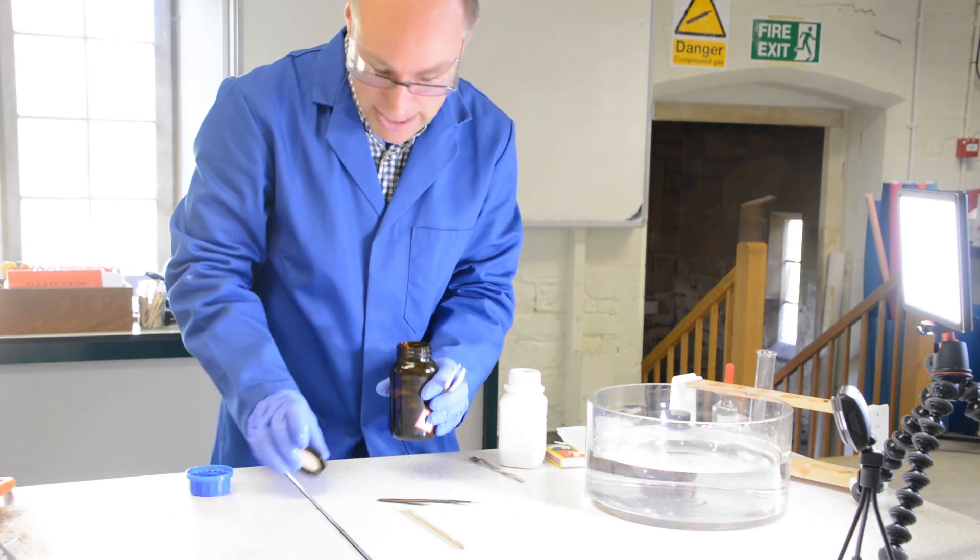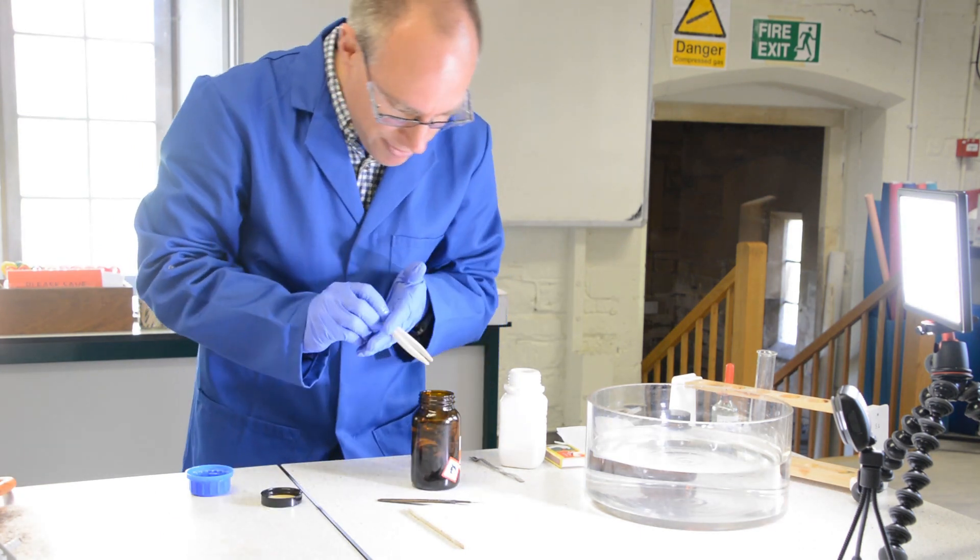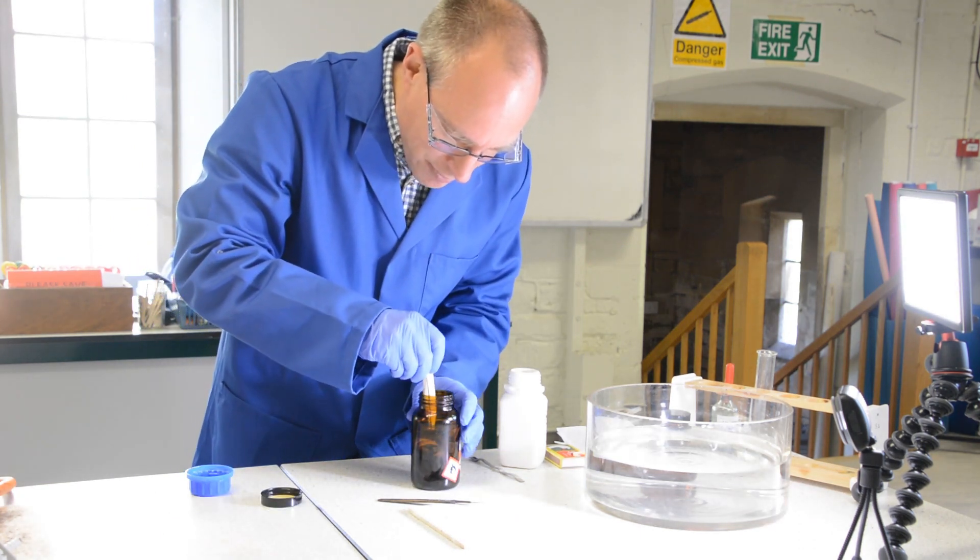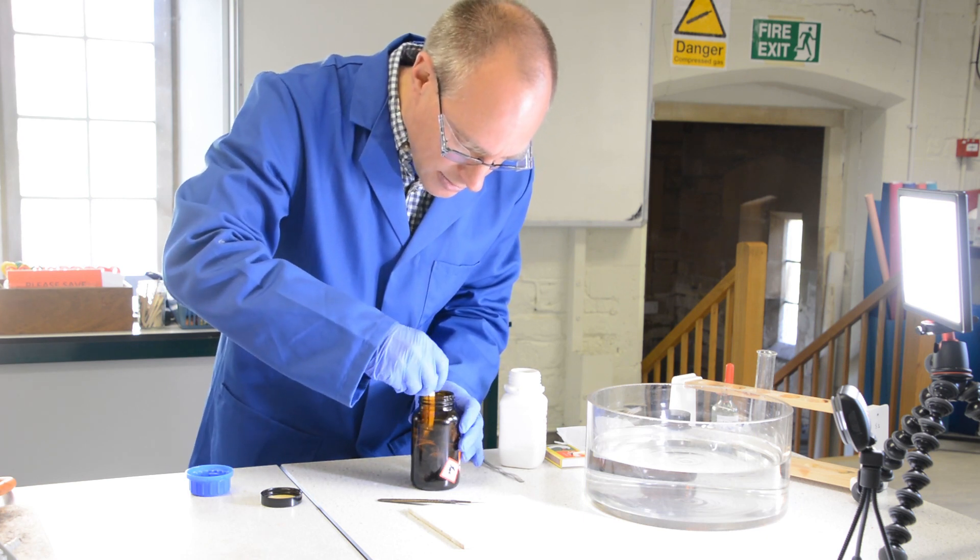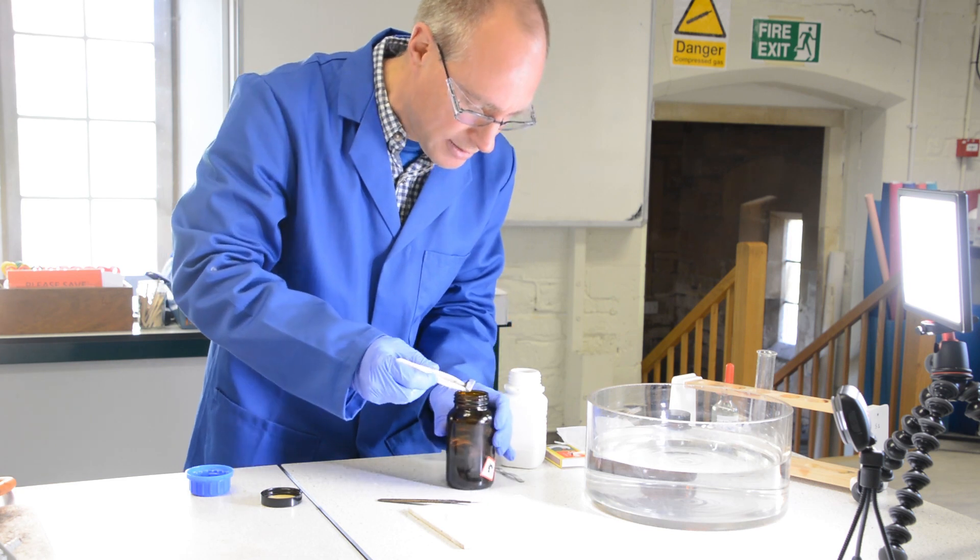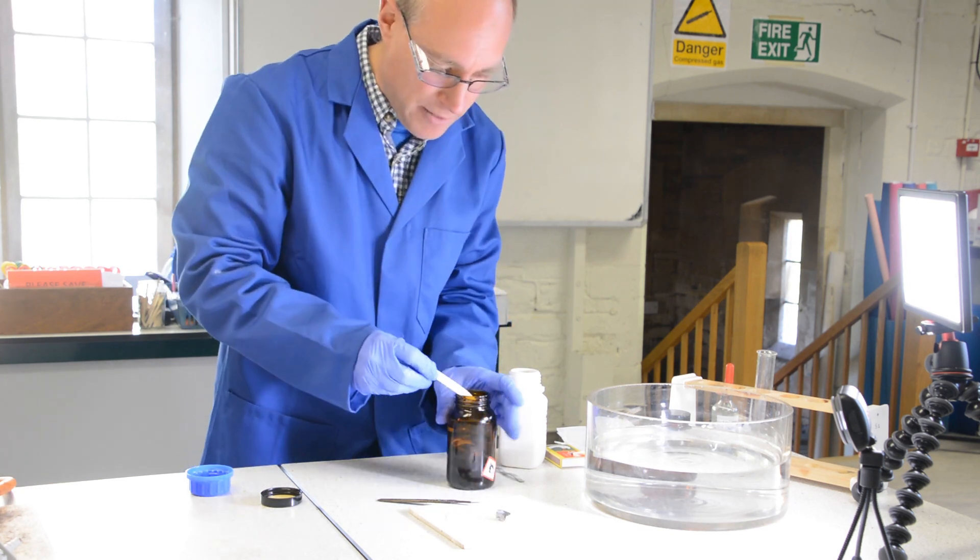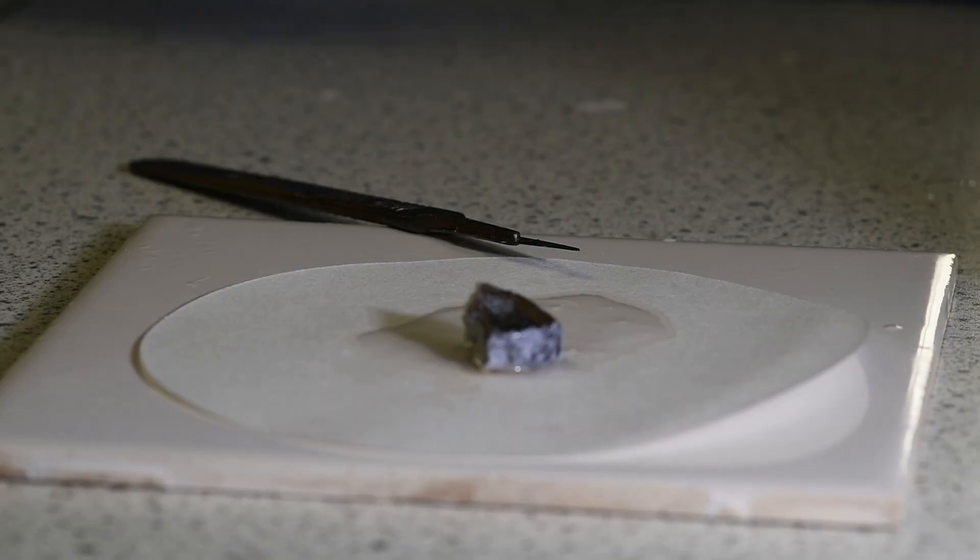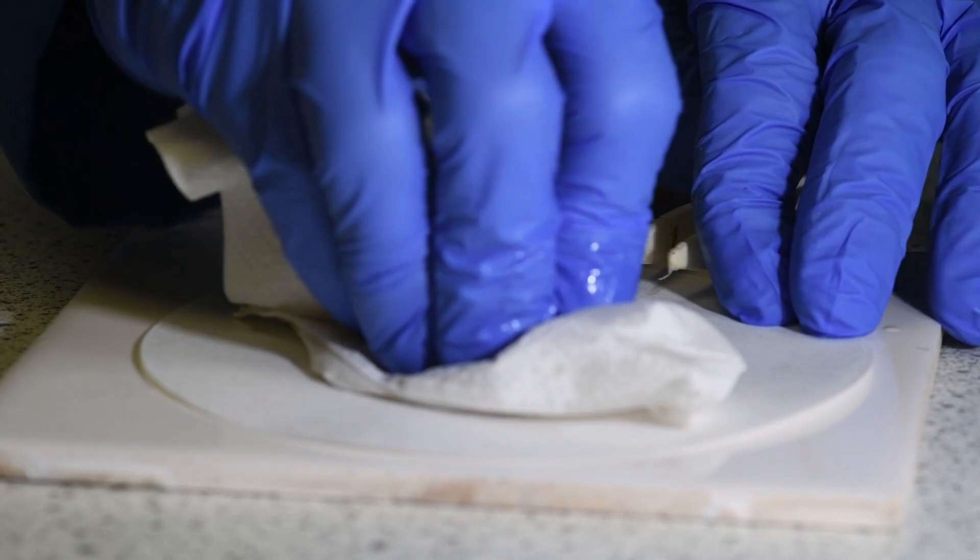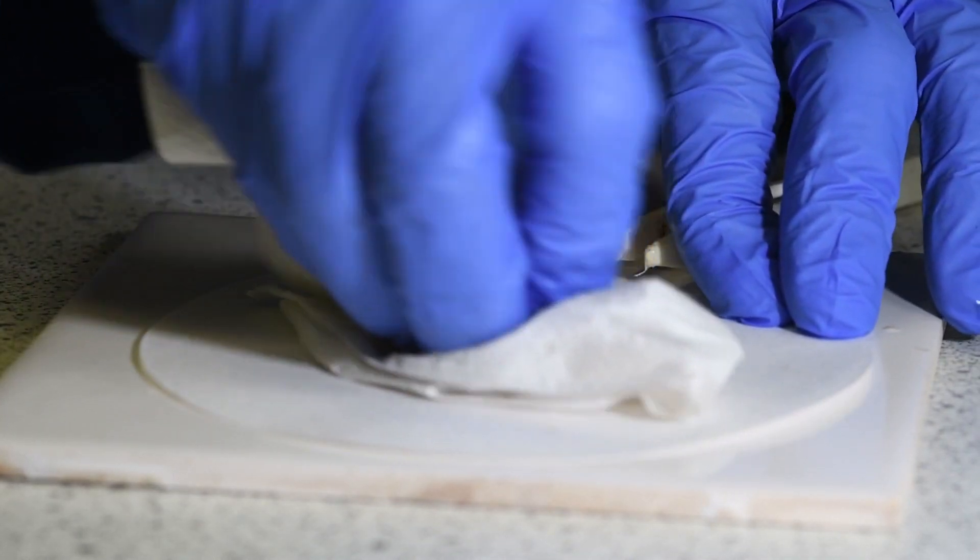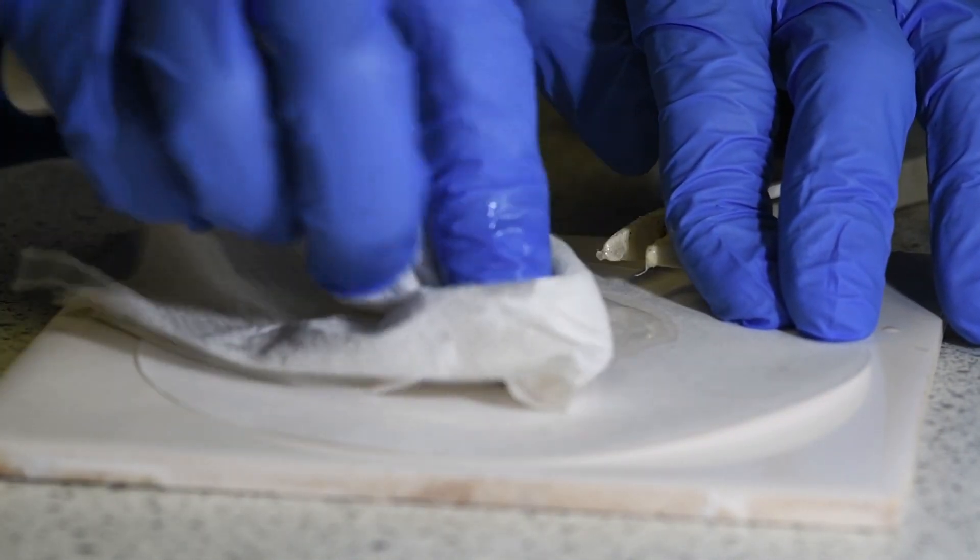And finally, potassium. Again, it's very rare that you get to see good sized pieces of potassium. So here is a piece of potassium and again covered in oil. I'll just dry some of that oil off that potassium.